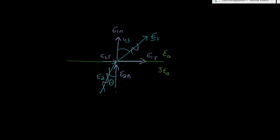Going back to boundary conditions, we have to realize that our E1 tangential equals our E2 tangential. So we know that our E1 tangential is equal to E1 times sine of 45.